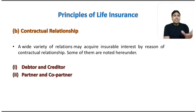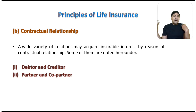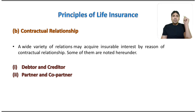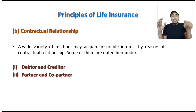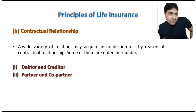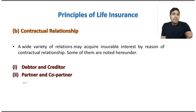Partners and co-partners: each partner is having an insurable interest in the life of a co-partner. If we have a partnership firm running smoothly and suddenly my partner dies, the firm will be disturbed and I may sustain a loss. So I am having an insurable interest in the life of my partner and can prepare a life policy on the life of my partner.